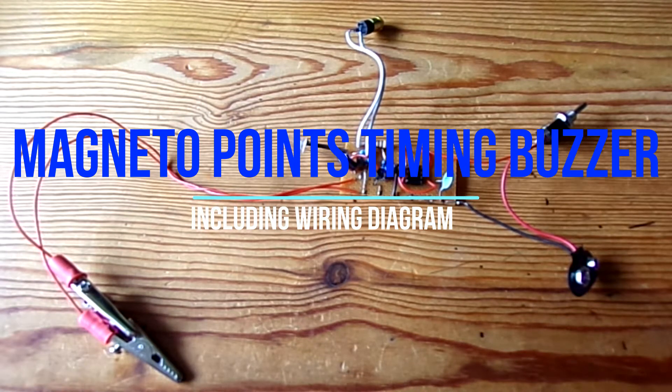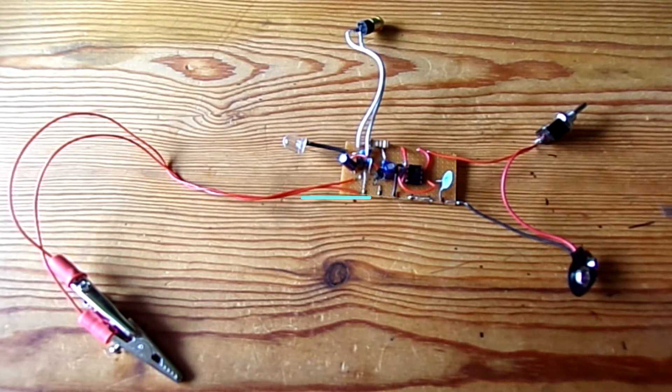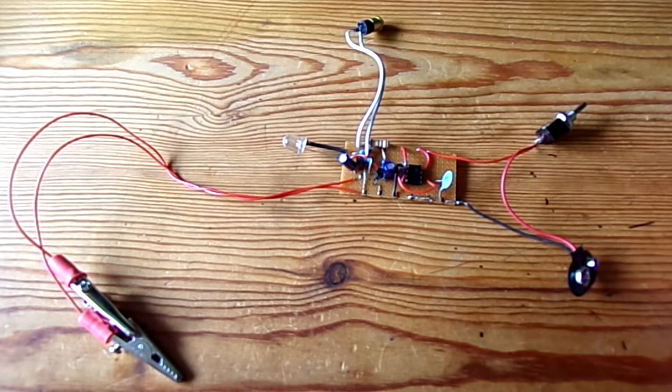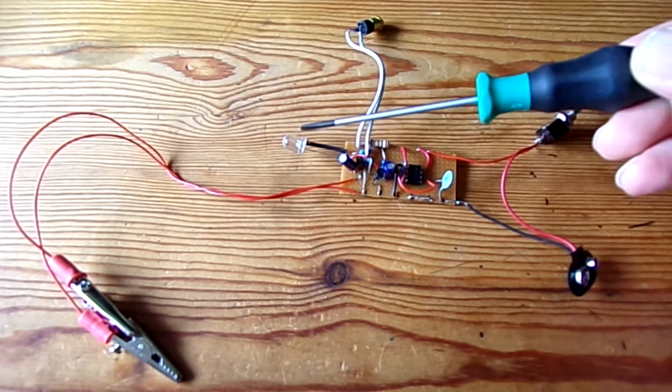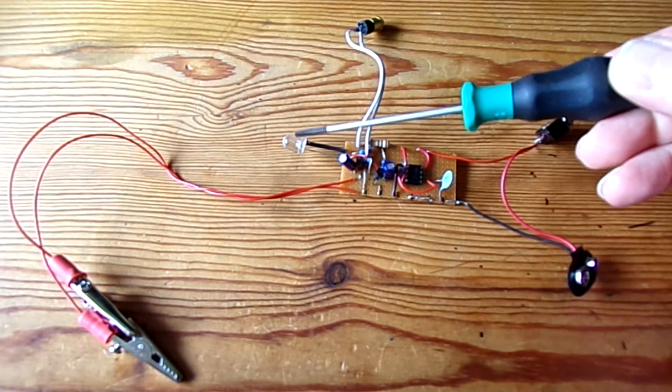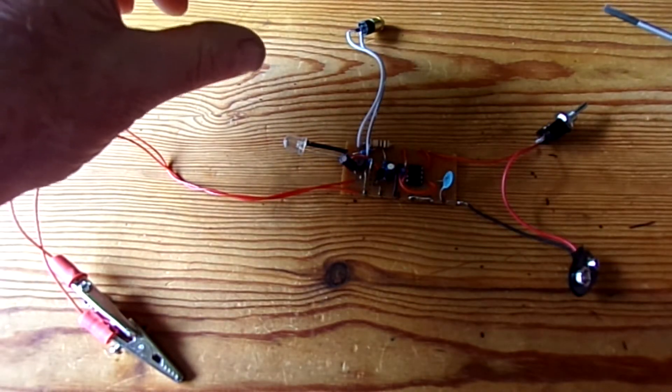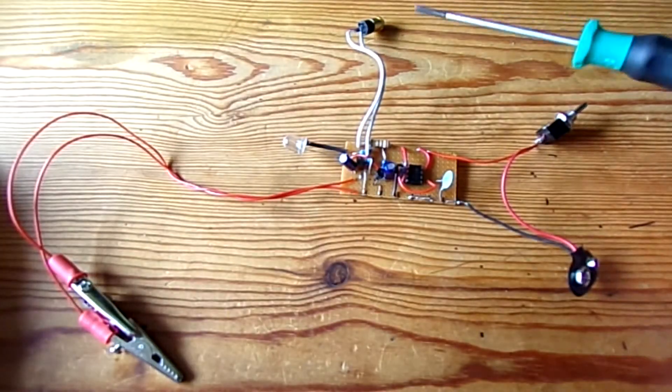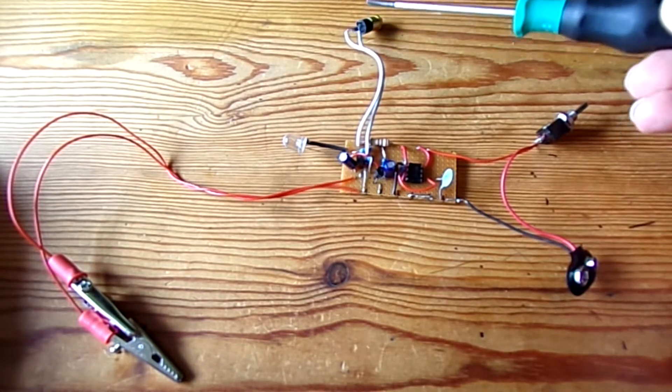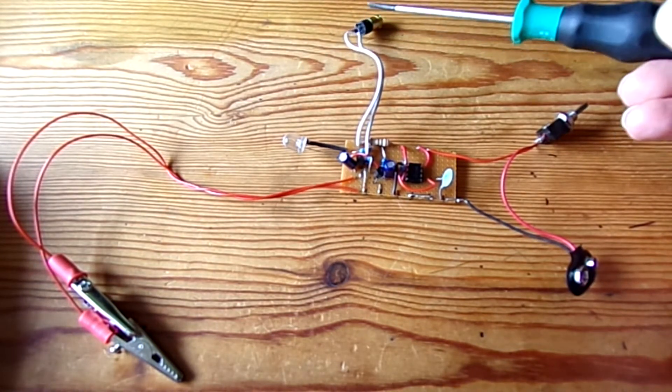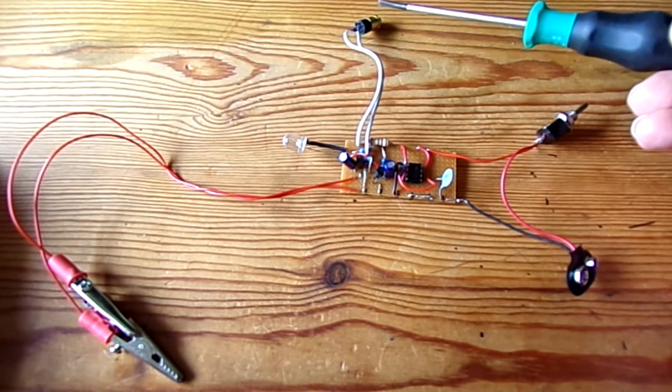This is my device I use for timing the magneto. It basically just gives a tone and this LED here doesn't actually go on and off, it dims, gives brighter and dimmer. The tone comes out to the headphone connector here and it changes, doesn't go on and off, but it's enough to tell when the points are opening and closing.